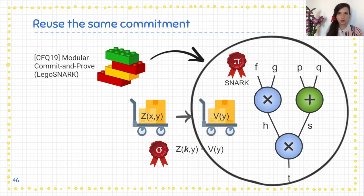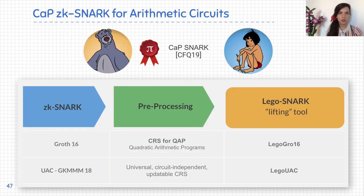For the second proof pi, we use the transformation by Matteo, Dario, and Anais from any efficient SNARK for arithmetic circuits to LEGO SNARK, which allows us to reuse the same commitment v(y) that appeared in the proof sigma. Our choice is a variant of Groth16, which is the most efficient protocol to date for quadratic arithmetic programs, and we use the LEGO-Groth16 defined by Matteo and Anais.